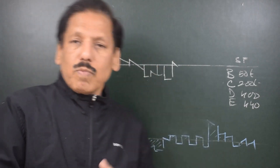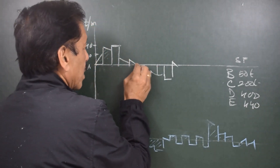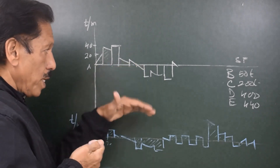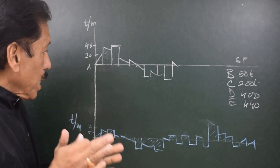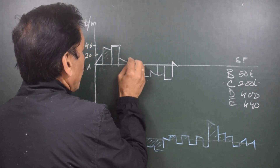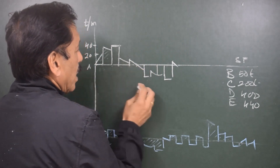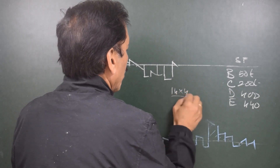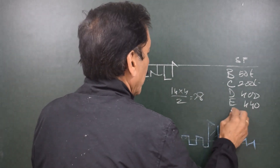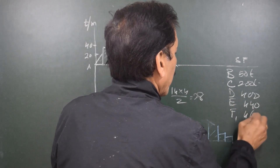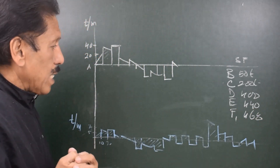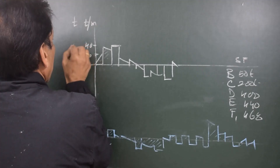This is how we keep progressing from left to right. At the point where the load curve changes direction — that is, it goes from positive to negative — we are expecting to get a peak of the SF curve. So if this value is 14 and the distance is 4, then 14 into 4 divided by 2 is 28. The SF at this point will be 440 plus 28, so 468. Now let's create a shear force curve with the scale of shear forces in tons: 200, 400, etc.